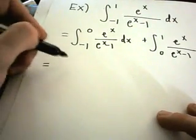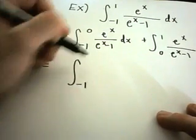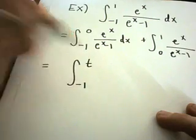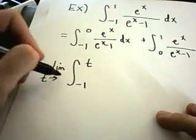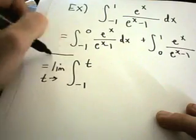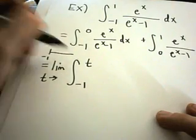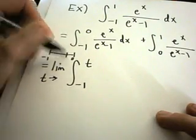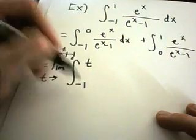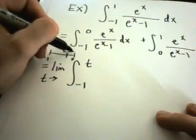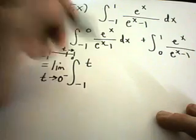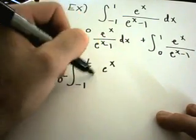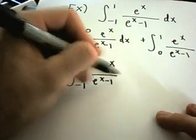Maybe we'll start with the left one here first. So 0 is my problem place, that's what I'll replace with the t. And t is going to be approaching 0 from the left if you think about it. We're going from negative 1 to 0, so we're plugging a t somewhere in between that interval, and t would be approaching 0 from the left.